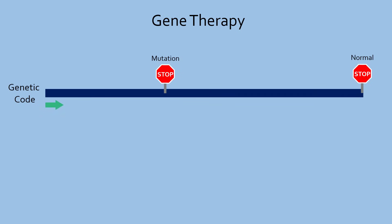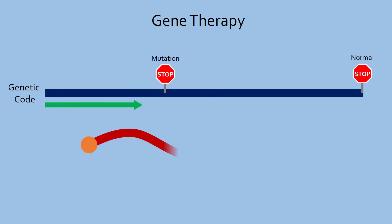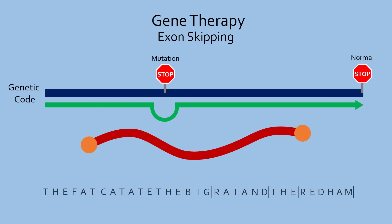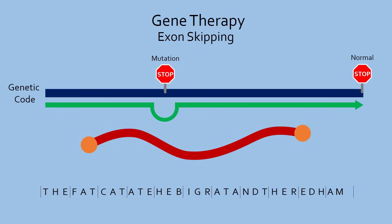Gene therapy aims at fixing the mutated dystrophin gene. One way is by making the cell skip a segment of the gene containing an early stop codon, a technique known as exon skipping. This results in a functional dystrophin protein with a slightly shorter central rod. Going back to the sentence analogy, by skipping part of the sentence, it makes sense again.